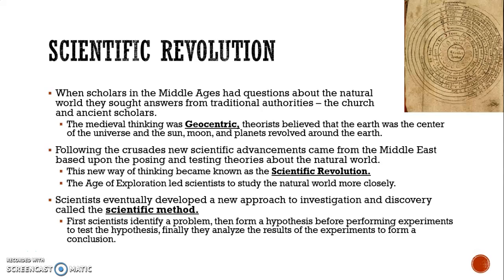During the scientific revolution — beforehand — scholars in the Middle Ages had a lot of questions about the natural world, and the only two places they went were either the church or ancient scholars. The medieval thinking was geocentric, meaning they believed that the Earth was the center of the universe and that the sun, moon, and planets revolved around the Earth. Following the Crusades, there was a lot of cultural diffusion happening from the Middle East, and they started to test things and pose questions about the natural world.